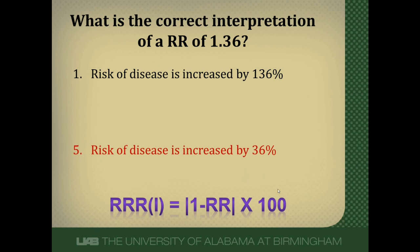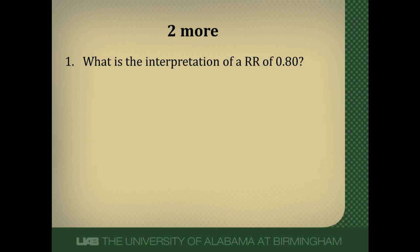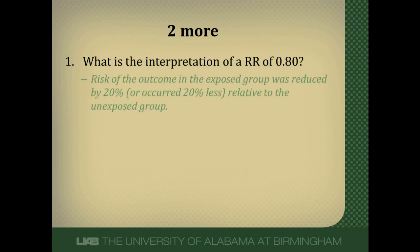Remember this formula — it's something you'll need for your step exams, but also importantly in clinical practice. For a relative risk of 0.8: the risk of the outcome in the exposed group is reduced by 20%, or occurred 20% less relative to the unexposed group. Remember that 1 minus 0.8 equals 0.2, or 20%.